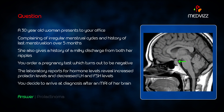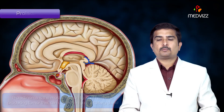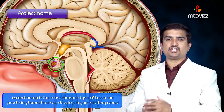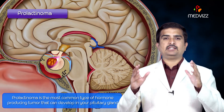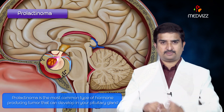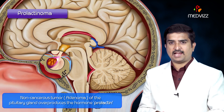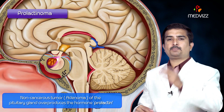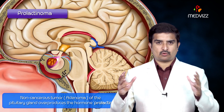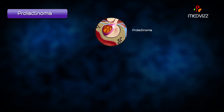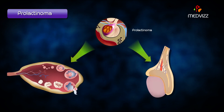This is the case of prolactinoma. Prolactinoma is the most common type of hormone-producing tumor that can develop in the pituitary gland — a non-cancerous adenoma of the pituitary gland that overproduces the hormone prolactin. The major effect is decreased levels of sex hormones: estrogen in women and testosterone in men.